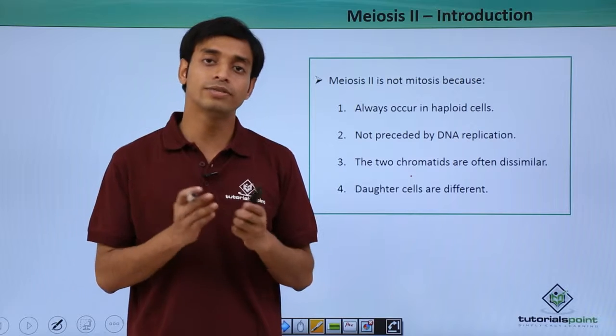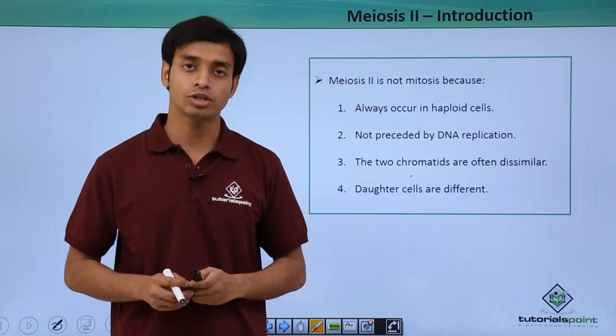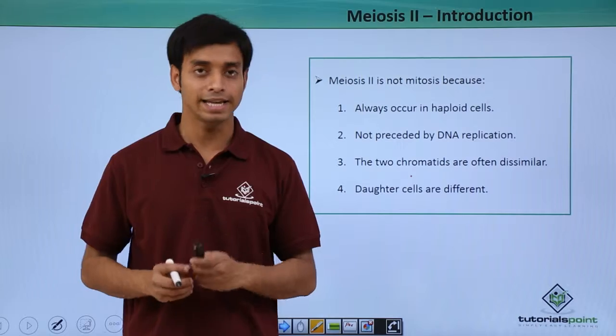So the daughter cells which are formed are quite different from each other because of the process of recombination with the help of recombinase enzyme.